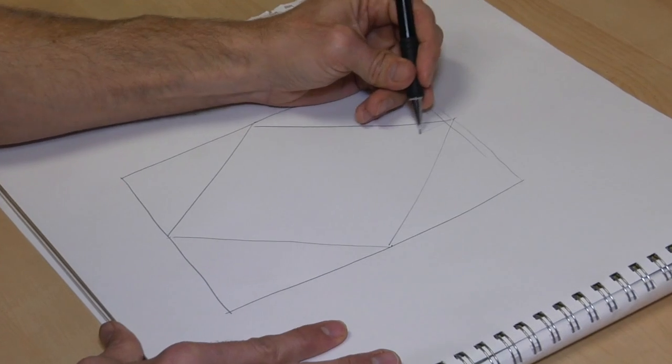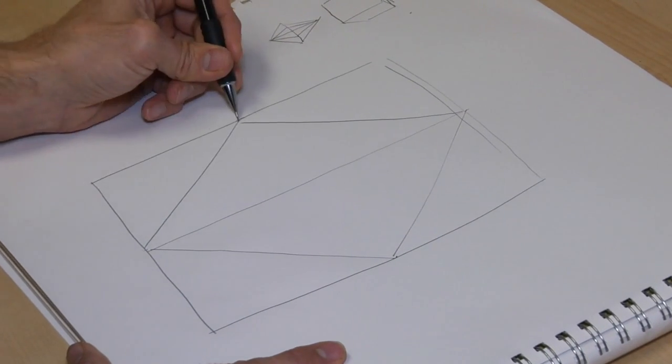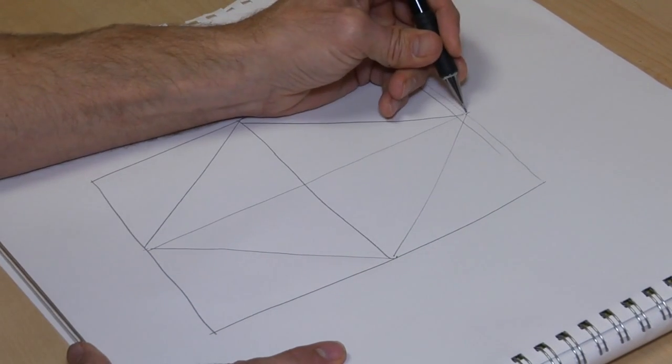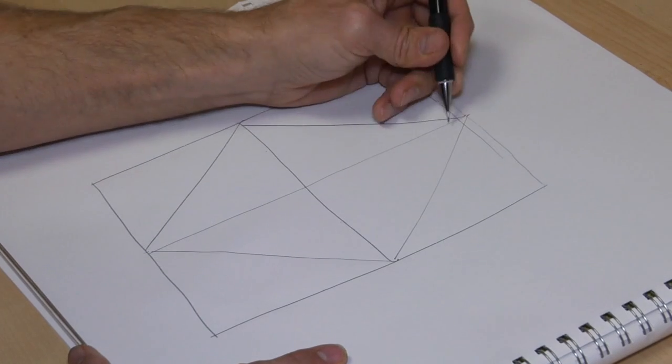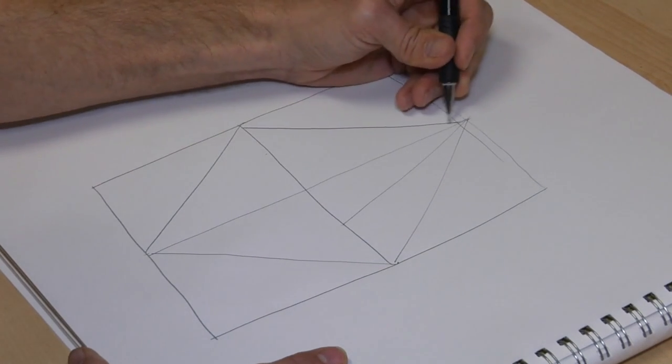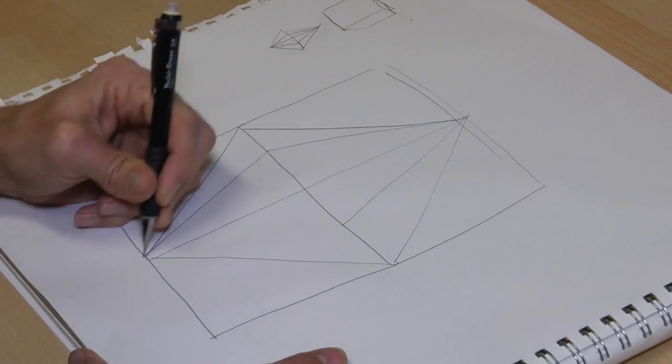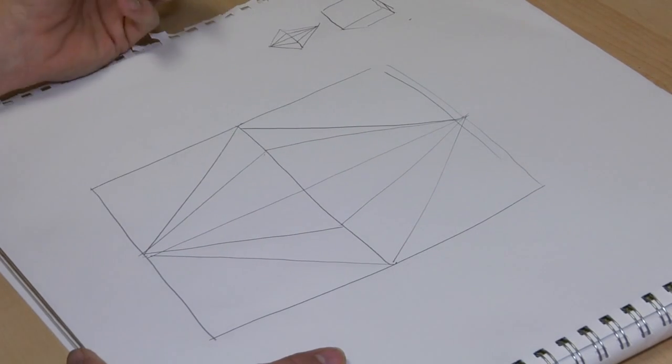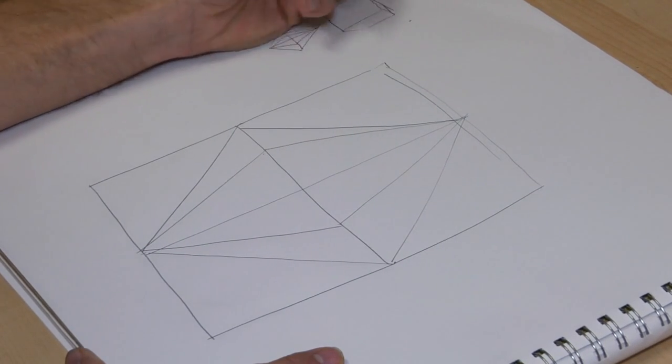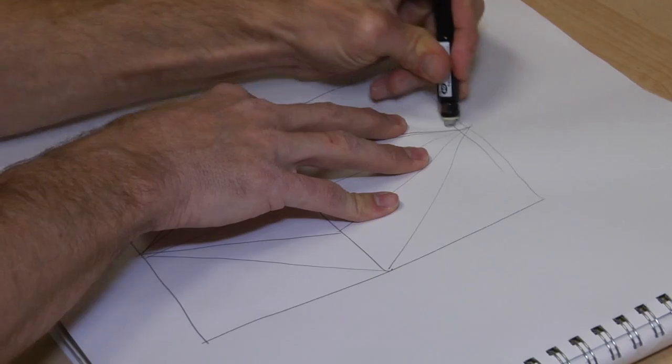Again, with the diamond, we'll come straight down, straight across. Pick the center point in each one of these lines, come to it, and then on down. And then you might want to come in on the edge. I'll erase some of these lines.